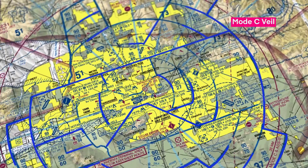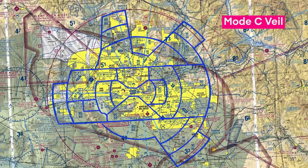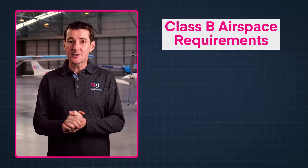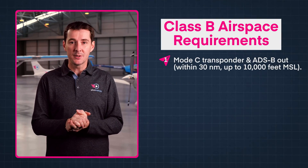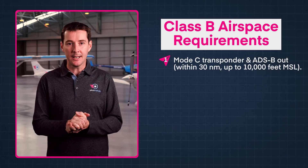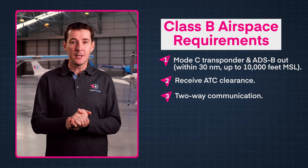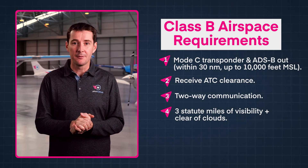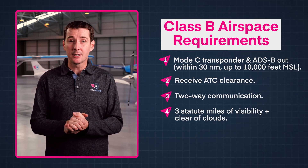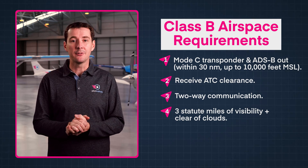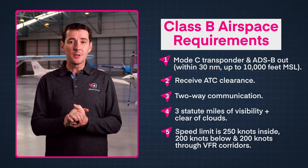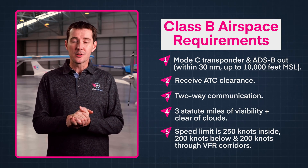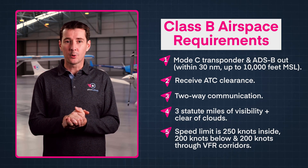There's also a 30 nautical mile Mode C veil that surrounds Class B airspace, depicted as a magenta circle on a sectional chart. Inside that circle, all aircraft need to have a Mode C transponder and ADS-B out. You also need ATC clearance before you enter Class B airspace. The VFR weather minimums require at least 3 statute miles of visibility, and you must remain clear of clouds to avoid IFR traffic. The speed limit is 250 knots inside Class B and 200 knots below it. The speed limit is also 200 knots through VFR corridors.